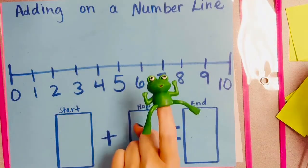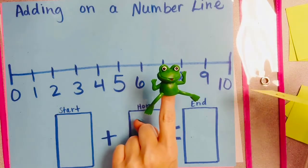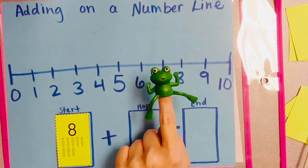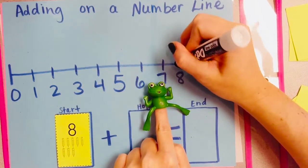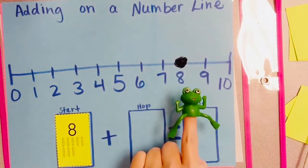One thing about Mr. Frog, once he hops, he doesn't want to stop. So let's have his starting number be 8. I'm going to put a lily pad on 8, and you can put a lily pad on your 8.